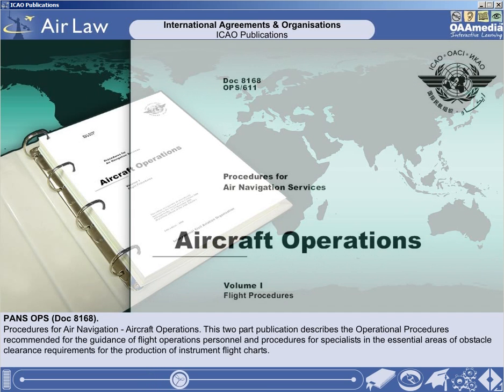Firstly, PANS-OPS, Document 8168 – The Procedures for Air Navigation and Aircraft Operations. PANS-OPS Document 8168 is a two-part publication. Volume 1 describes the operational procedures for air navigation, or PANS, that are recommended for the guidance of flight operations personnel. Volume 2 describes the procedures for the guidance of specialist personnel designing instrument flight charts in geographic areas requiring essential obstacle clearance.